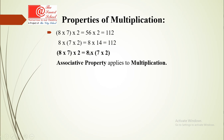For the associative property of multiplication: (8 multiplied by 7) multiplied by 2 equals 56 multiplied by 2 equals 112. And 8 multiplied by (7 multiplied by 2) also equals 112. Both answers are the same, so associative property applies to multiplication.